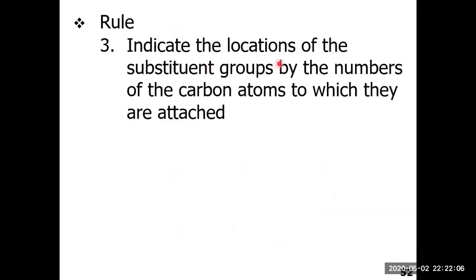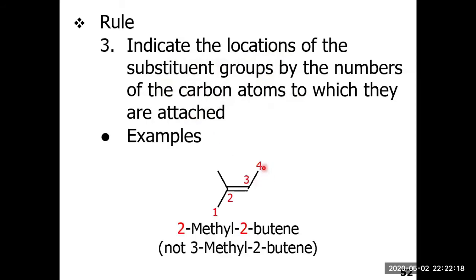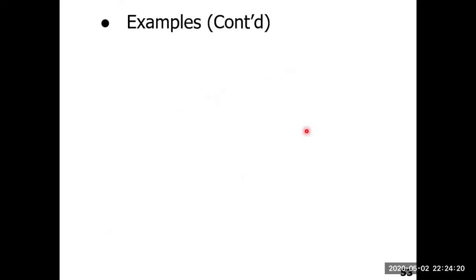Another rule tells us how to give names for branched alkenes. We indicate the location of substituent groups by the number of the carbon to which they are attached. For example, we have a four-carbon alkene — butene — where the carbon-carbon double bond starts at carbon number two, so the parent becomes 2-butene. At carbon number two of the parent chain we have a branch point, which is a methyl group. So the final name is 2-methyl-2-butene.